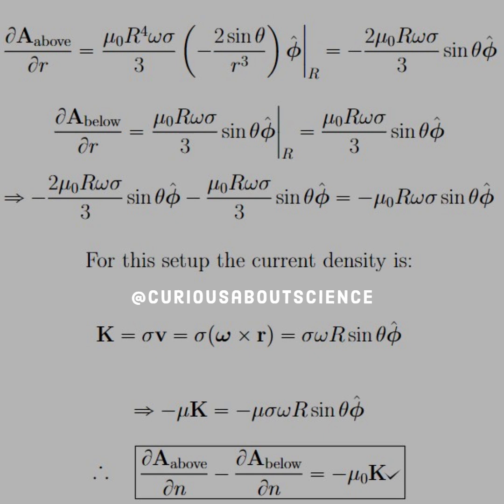When we multiply by mu naught, we get mu naught K. That must have been a typo, but that should be mu naught. Anyways, when we take the difference between the two normal derivatives, it indeed equals negative mu naught K, so we're good to go.